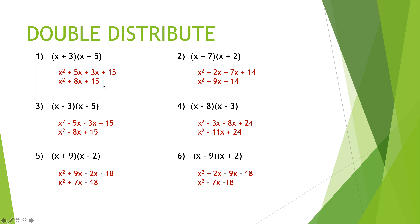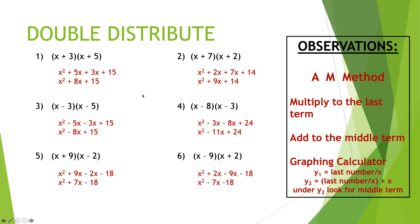What we did here was six problems where every single time it was a binomial multiplied by a binomial, and we produced a trinomial every single time. We also only did cases where it was one x times one x giving us one x squared in the front. When that happens, there are some patterns we can see — some conclusions, some observations. Remember, ultimately we're going to go backwards and reverse engineer things: I'll give you x squared plus eight x plus something and want you to tell me the two binomials.